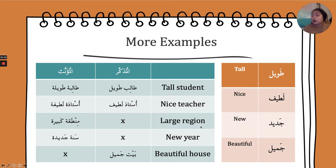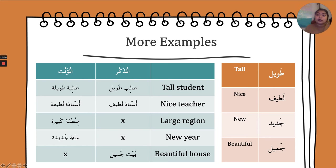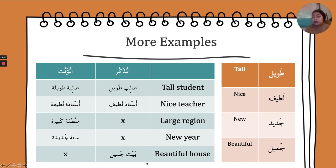Large region: منطقة ends in a ta'marboota, meaning it is مؤنث and non-human, so it can't take both genders. منطقة كبيرة — the adjective also takes the ta'marboota. New year: سنة also ends in a ta'marboota, so it is feminine: سنة جديدة — adding the feminine ta'marboota to the adjective. Beautiful house: bayt is مذكر — masculine — so the adjective also has to be masculine: بيت جميل.